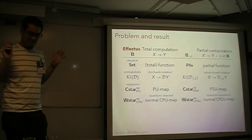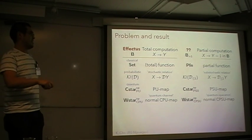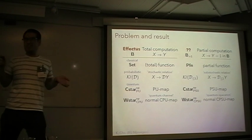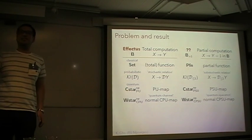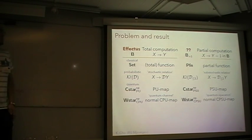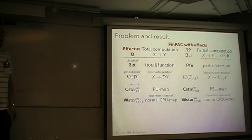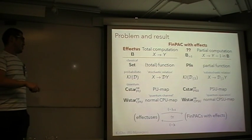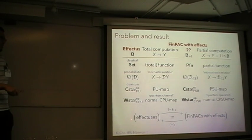So we get this table, and the problem I studied is: what is this category? Can we characterize or identify this class of categories arising as the Kleisli category of the lift monad on an effectus? The answer is: this is what I call finpacks with effects. And in fact, I obtained an equivalence of categories — an equivalence between the category of effectuses and the category of finpacks with effects. This is mainly the main result of my paper.